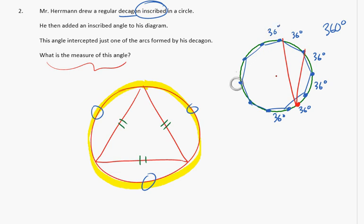Because 36 times ten is going to be what it takes to get to 360. Now this inscribed angle is cutting off one of these arcs. And the relationship between an inscribed angle and the arc that it intercepts is that the inscribed angle is half of the arc. So this angle is going to equal half of 36, which is 18 degrees.